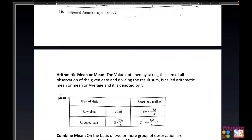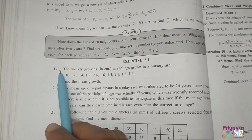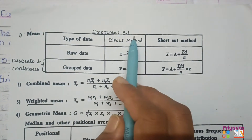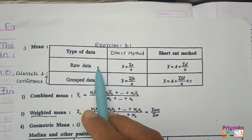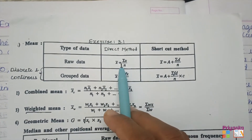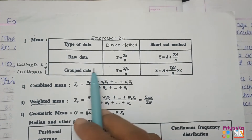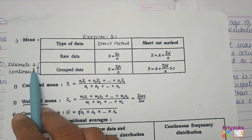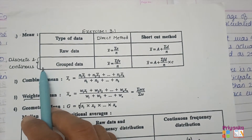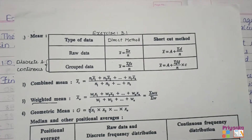Chapter 3, exercise 3.1 starts on page number 78. The first formula: we are going to solve mean where the information will be given as raw data or group data. Raw data is where only values of x are given and we find Σx upon n. Group data can be discrete or continuous — this connects to what we already learned in chapter 2. Let's start with exercise 3.1.